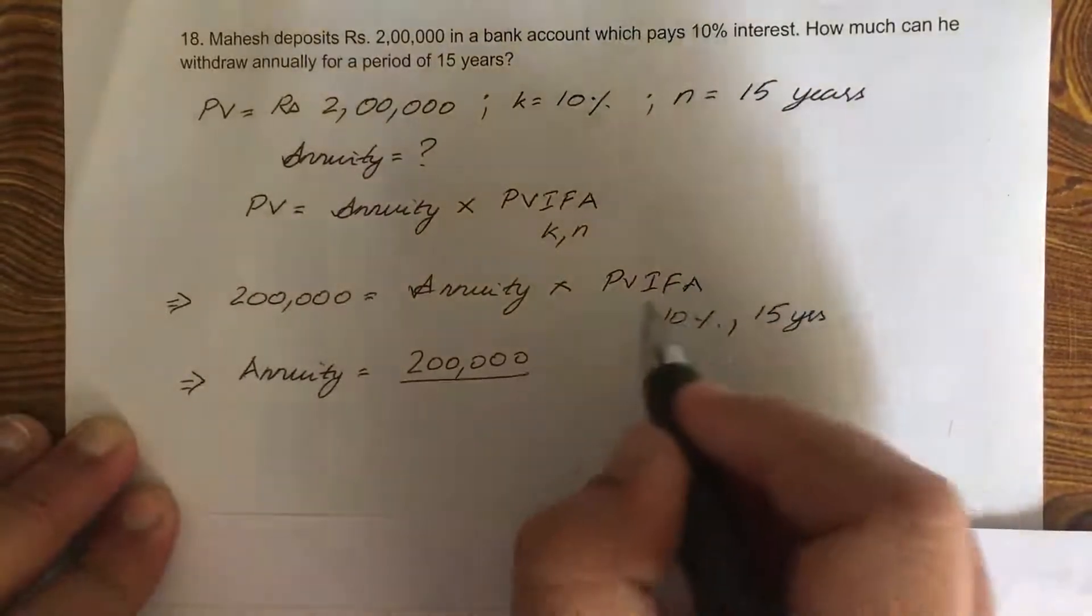So the annuity is 200,000 divided by PVIFA at 10% for 15 years. Now let's find out the PV factor using the table, the present value interest factor for one rupee annuity discounted. So the rate of interest is 10%, period is 15 years. Now look at 10%, here 10%. Now look at the period, 15 years. Now the value that corresponds to 10% and 15 years is 7.606.